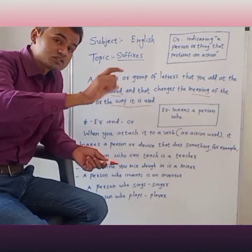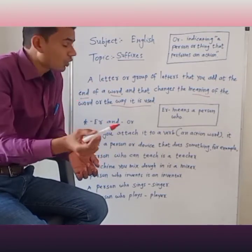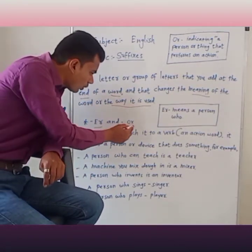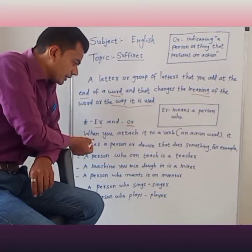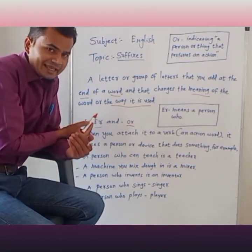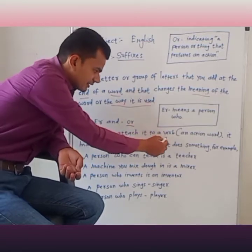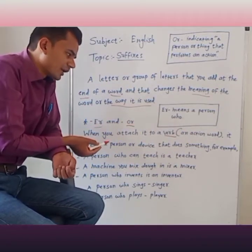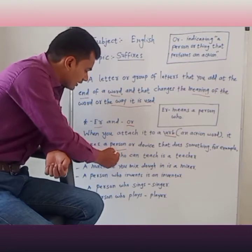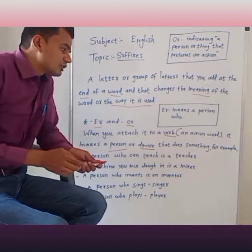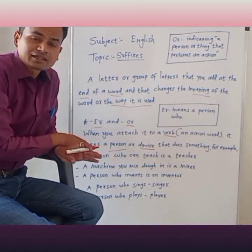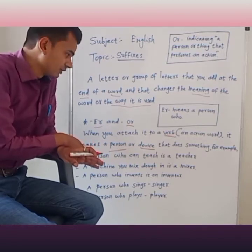Let's see its example. So here we have to learn about er and or suffixes. When you attach it to a word, it makes a person or device that does something. So here we have to explain and understand it. Let's see its example.